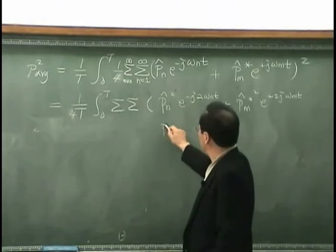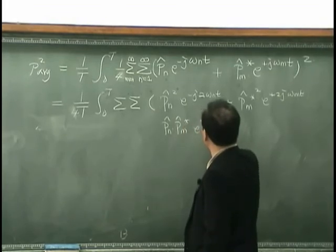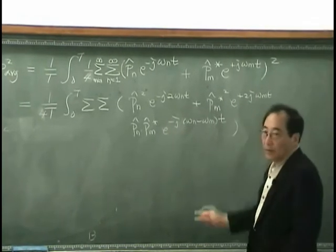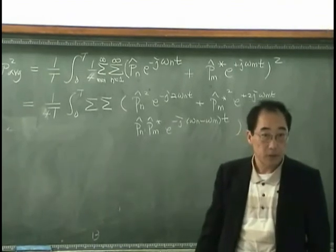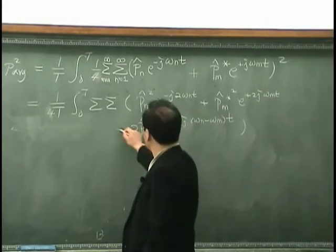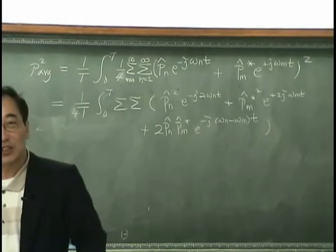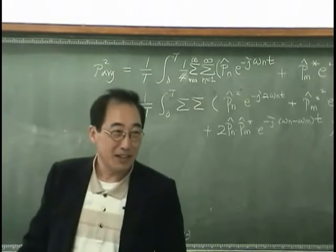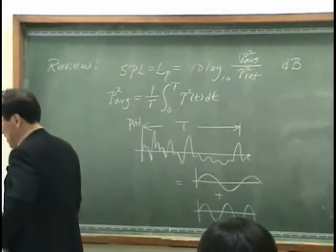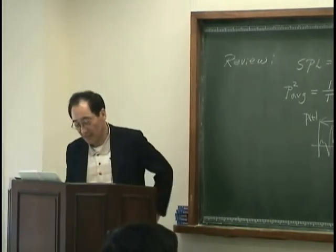And then, I have pn hat, pm hat conjugate, exponential minus j omega n minus omega mt. Multiply by 2. He got partial credit too. All right?